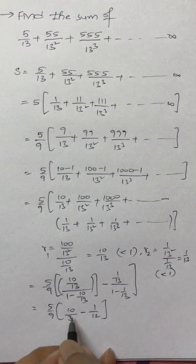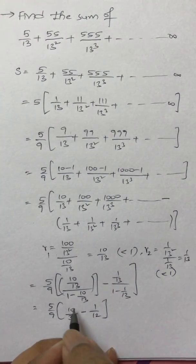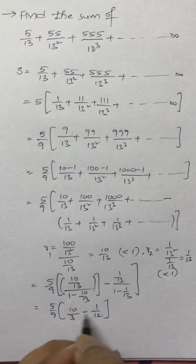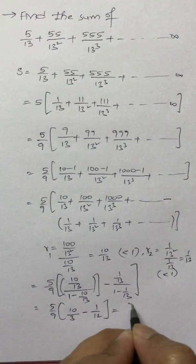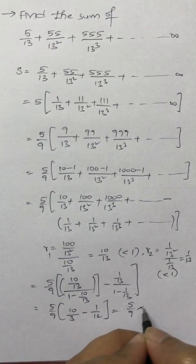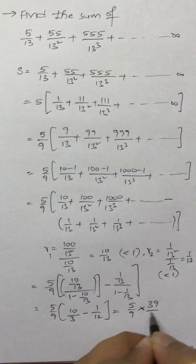So multiply by 4 and divide, it will be 40/12. So 39/12, so 5/9 into 39/12.